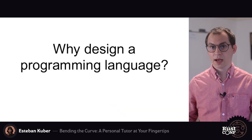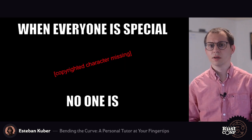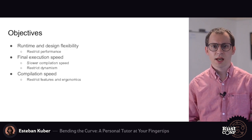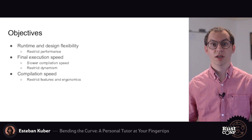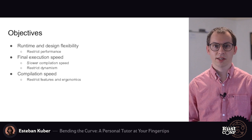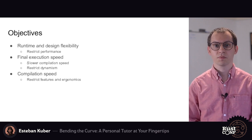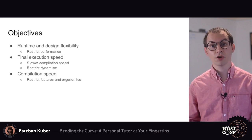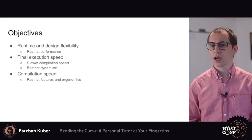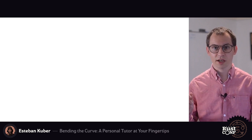When designing a programming language, you will have a list of priorities or objectives you want to accomplish. You can't prioritize all things equally, which means that some will have a higher weight than others, and some will even restrict or preclude others. You may want to prioritize runtime and design flexibility, but this priority will almost assuredly restrict how performant your language could be. You could decide to prioritize final execution speed, but that may require you to sacrifice compilation speed or restrict how dynamic your software can easily be made at runtime. An example from Rust is that the smallest compilation unit is the crate and not the file like in other languages.